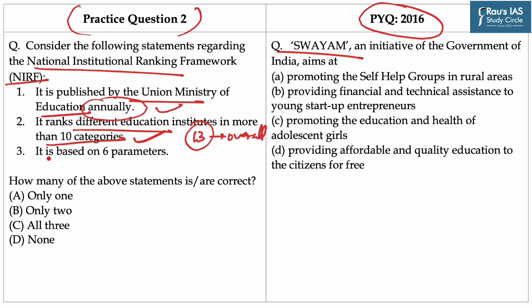Statement number 3: It is based on 6 parameters. This statement is incorrect because the ranking framework outlines a methodology to rank institutions based on 5 parameters: Teaching, Learning and Resources; Research and Professional Practices; Graduation Outcomes; Outreach and Inclusivity; and Peer Perception. How many of the above statements are correct? From the above discussion, two statements are correct. Hence, option B is the right answer.